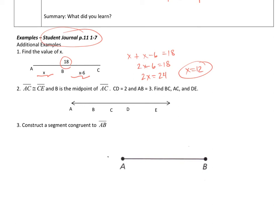For number 2, it says AC is congruent to CE. B is the midpoint of AC, so this cuts AC in half. CD is 2, and AB is 3. We need to find BC, AC, and DE. Well, if AB is 3 and B is the midpoint, then BC is also 3. So AC equals 6. And since AC equals CE, CE is also 6. Since CD is 2, that means DE must be 4. So BC equals 3, AC equals 6, and DE equals 4.